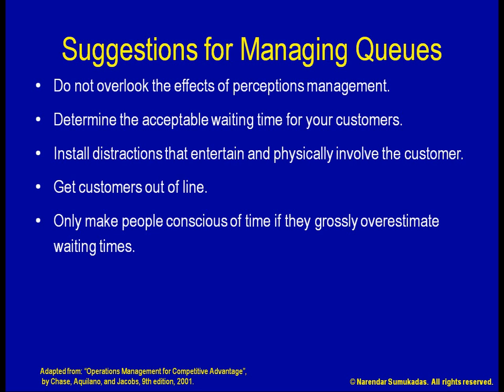Another good example is how the rides in many amusement parks display waiting time estimates. Given that each ride is different, an average customer is unable to assess the waiting time by simply looking at the visible portion of the waiting line. Armed with an inaccurate estimate, the customer is now set up for frustration. A display of the waiting time precludes such frustration.